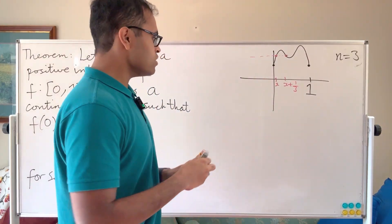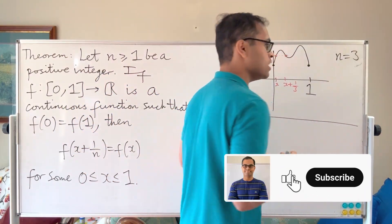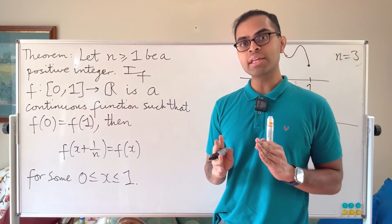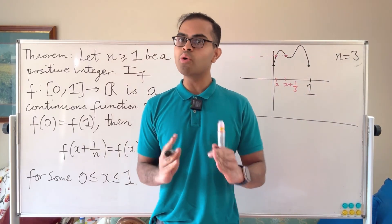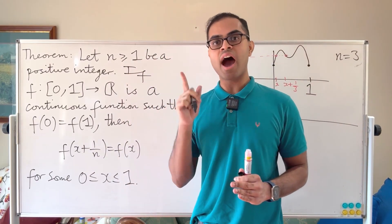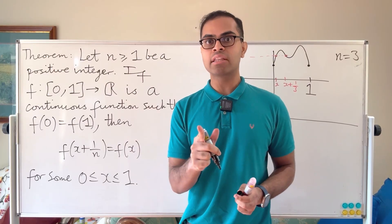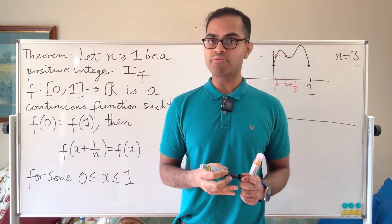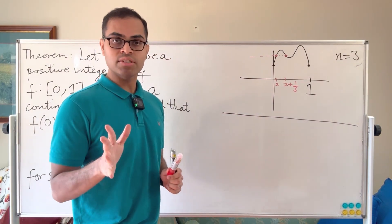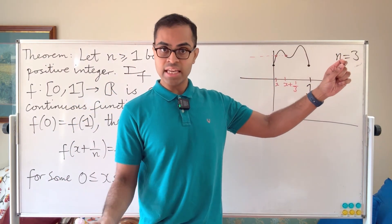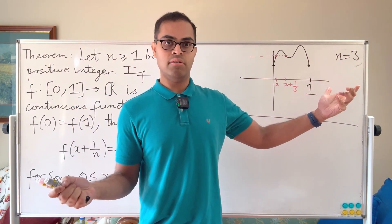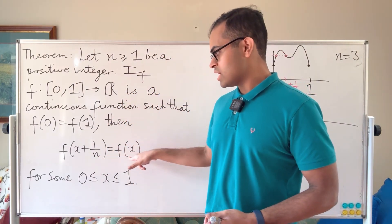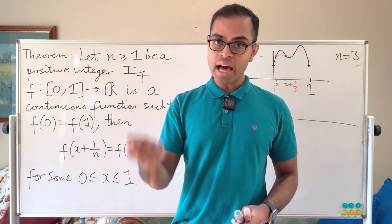Here's the proof. The core concept: whenever you think about problems with continuous functions and showing that an equation has a solution without necessarily knowing where the solution is, you always want to think of the IVT — the intermediate value theorem. It basically says that if you have a continuous function that is positive somewhere and negative somewhere, then it has to be zero in between.